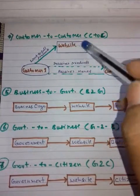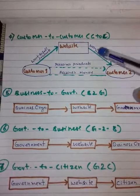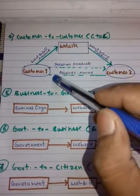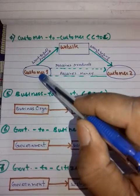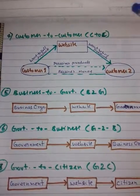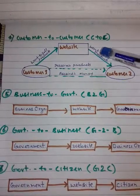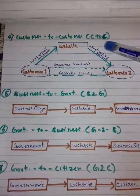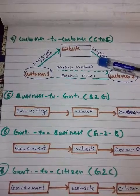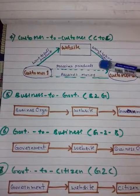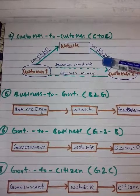The fourth model is Customer to Customer, also known as C2C. In C2C there is a website and many customers — customer one, two, three, four, and so on. Lots of customers are available. In the Consumer to Consumer e-commerce environment, consumers sell their online goods to other consumers.